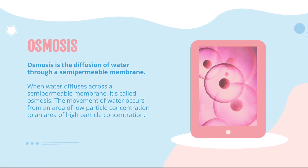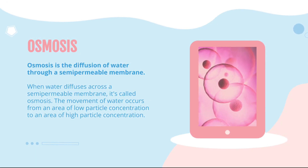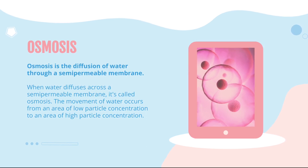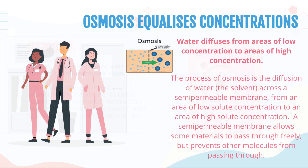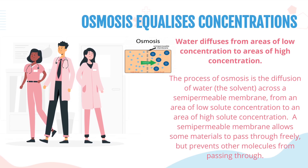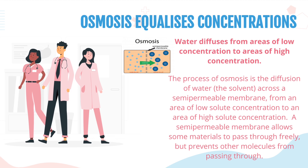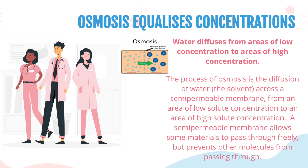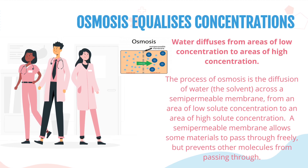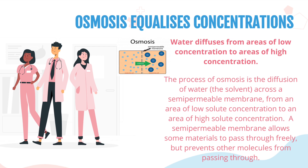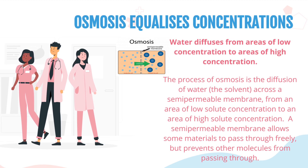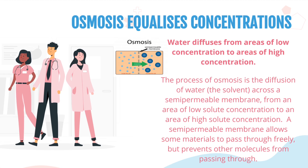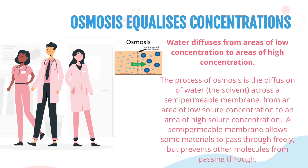Osmosis is the diffusion of water through a semi-permeable membrane. The movement of water occurs from an area of low particle concentration to an area of high particle concentration. Osmosis equalizes concentration. Water diffuses from areas of low concentration to areas of high concentration. The process of osmosis is the diffusion of water, the solvent, across a semi-permeable membrane, from an area of low solute concentration to an area of high solute concentration. A semi-permeable membrane allows some materials to pass through freely but prevents other molecules from passing through.